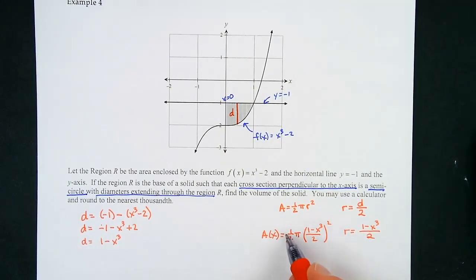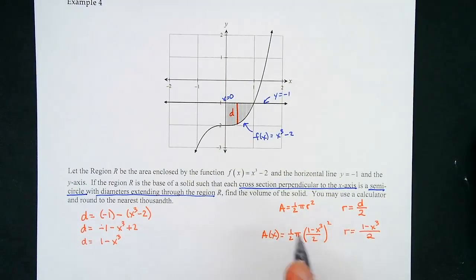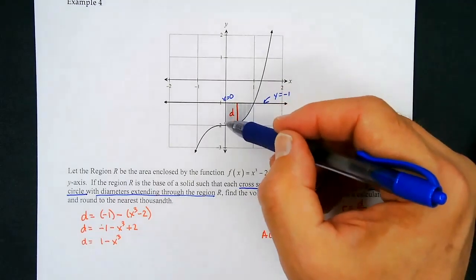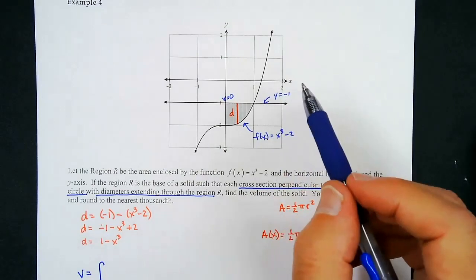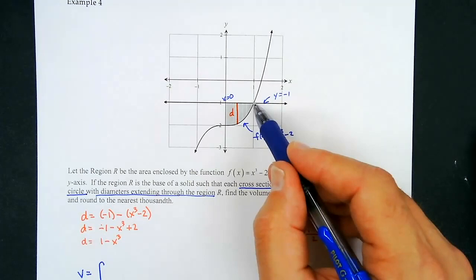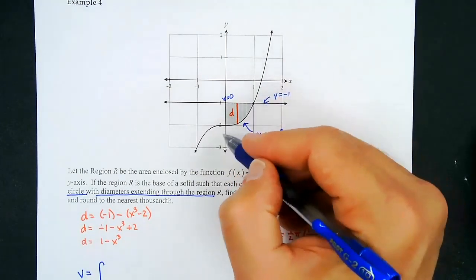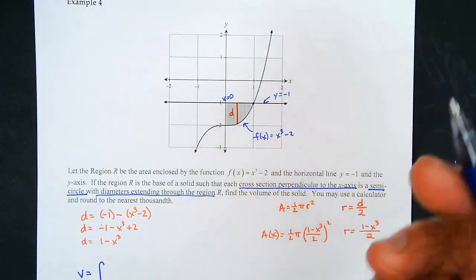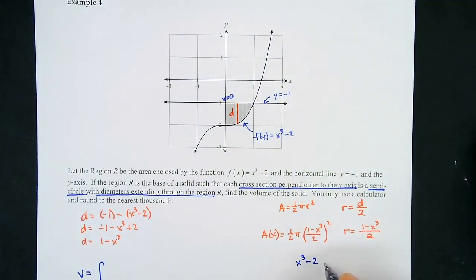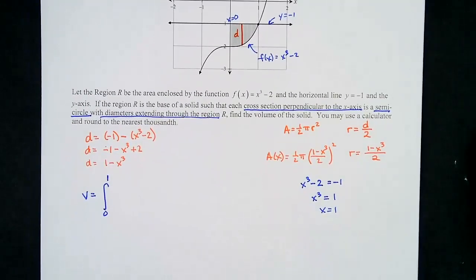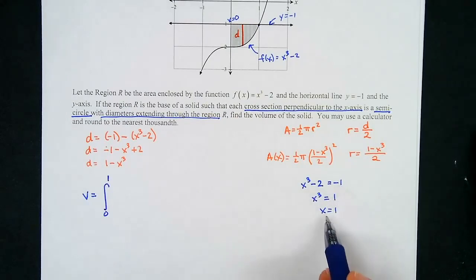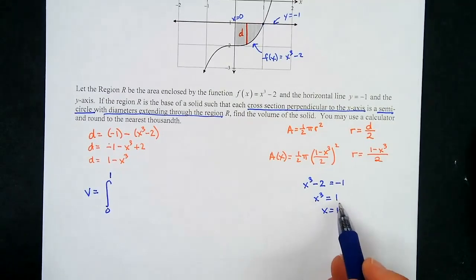We start at x = 0. To find the upper limit, solve where x³ − 2 = −1: x³ = 1, so x = 1. The integral runs from 0 to 1. Bringing the constants out: V = (π/2) ∫₀¹ ((1 − x³)/2)² dx. The thickness is dx.